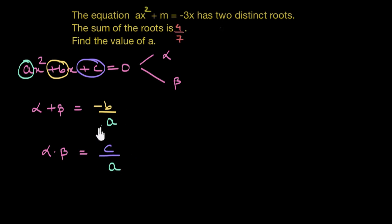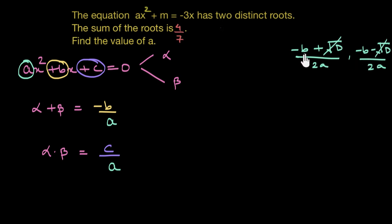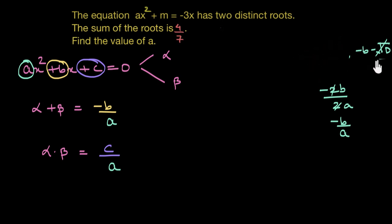If you might question how we get these values, there are multiple ways. You can use the quadratic formula and write down the expression for roots. If the roots are alpha and beta, according to the quadratic formula, the roots will be negative b plus square root of discriminant divided by 2a, and negative b minus square root of discriminant divided by 2a. When you add them, the square root of d terms cancel out, and negative b and negative b give us negative 2b divided by 2a. The 2s cancel out, leaving negative b by a, which is indeed the sum of roots. Similarly, when you multiply them, you get the product of the roots as c by a.